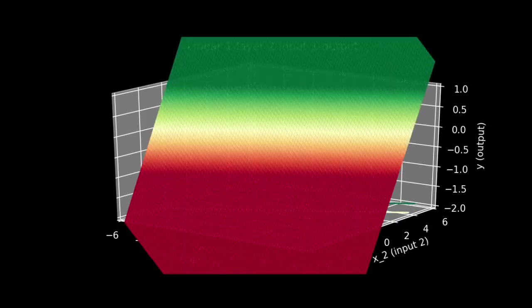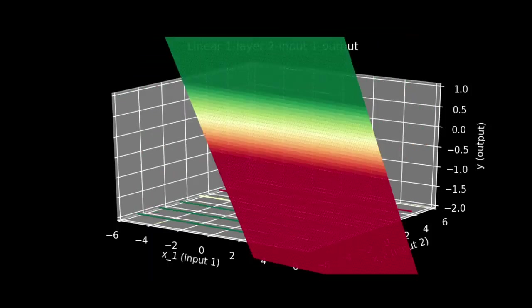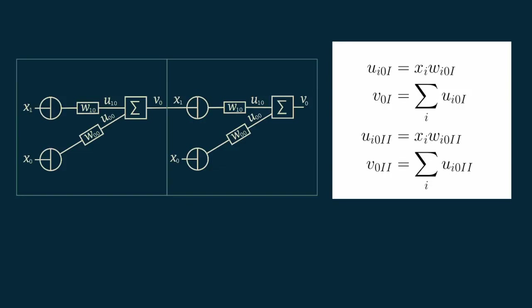So far, so good. Now we can start to get fancier. Our input x sub 1 looks a lot like our output v sub 0. In fact, there's nothing to prevent us from taking our output and then using it as an input to another network just like this one.